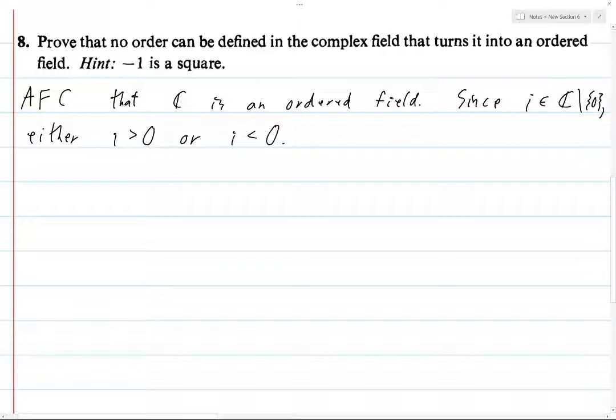Okay, so if i is greater than 0, then we know by our properties that if you have two elements which are greater than 0, i.e. if you have two positive elements, then their product is positive.